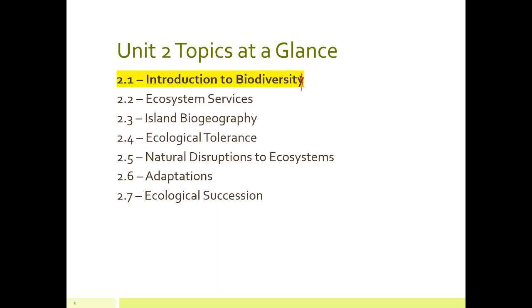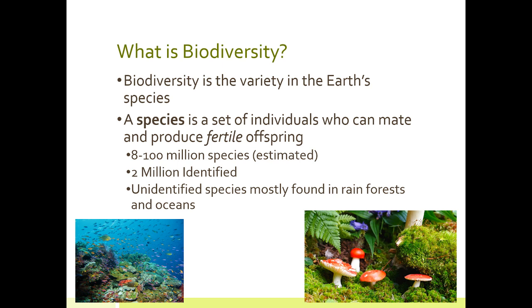Part four covers adaptations and part five covers ecological succession. We start part one talking about biodiversity — essentially the vast amount of different species and living things on Earth. A species is a set of individuals that can mate and produce fertile offspring. The key word is fertile.